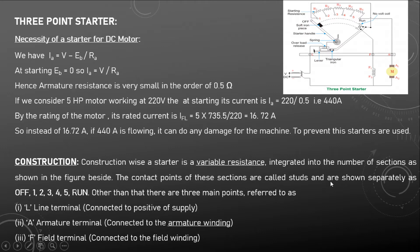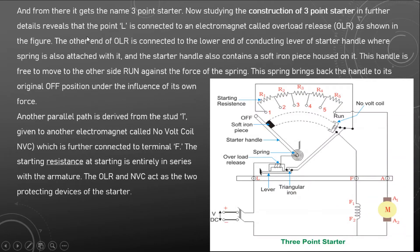The studs are labeled one, two, three, four, five, and run. Other than that, there are three main terminals: L (the line), A (armature terminal), and F (field terminal). L is connected to the line, F is connected to the field winding, and A is connected to the armature of the motor.